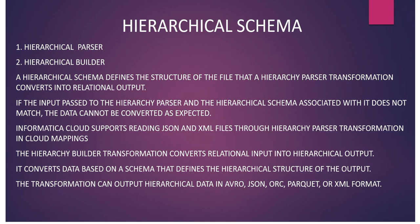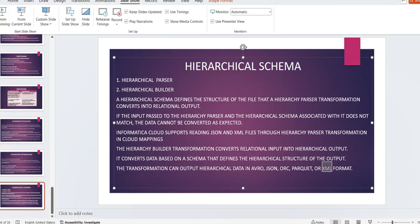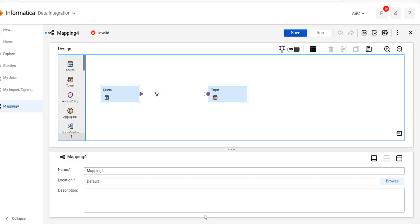In hierarchical builder transformation, it converts the relational input into the hierarchical output and it converts the data based on a schema that defines the hierarchical structure of the output — for example Avro, JSON, ORC, Parquet, or XML format. Let's understand this with examples for both the hierarchical parser and the hierarchical builder.